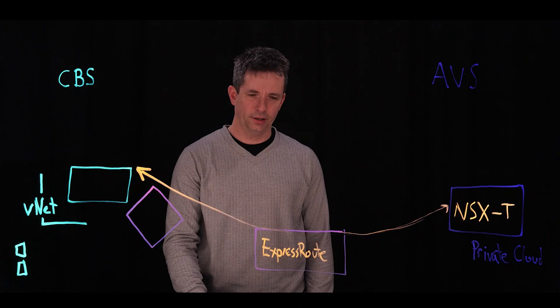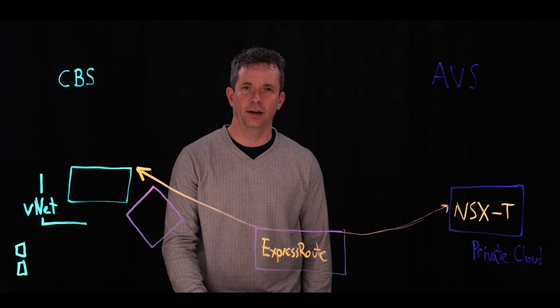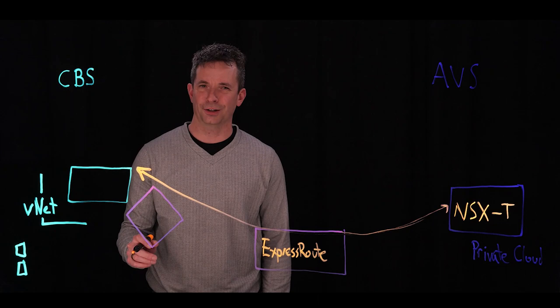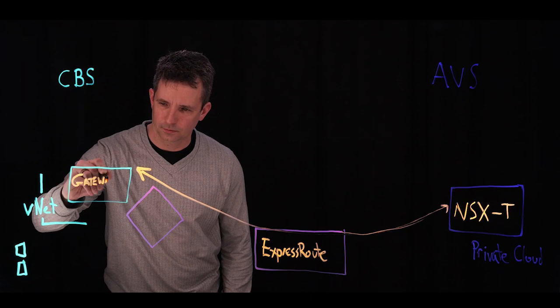So in order to establish this connection, there's a couple of really important recommendations that we make to make this solution as performant as possible. Obviously, the first thing that you're going to need on your vNet, and this is the same vNet where your Cloud Block Store instance resides, is you're going to need a gateway subnet.